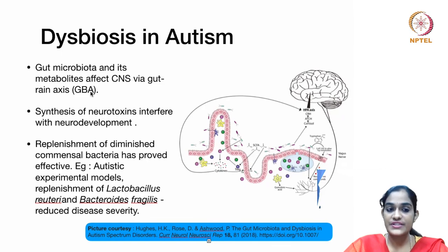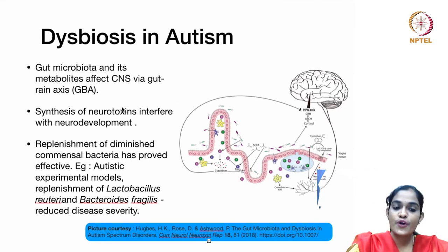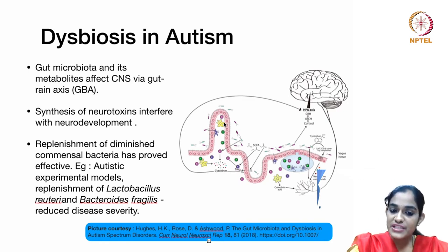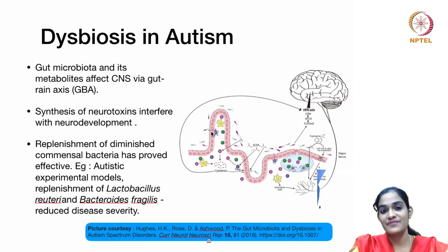Dysbiosis in autism: the gut microbiota and its metabolites affect CNS functioning via the gut-brain axis. Neurotoxins produced by these microorganisms can cross the gut-brain barrier and interfere with normal neurodevelopment in children, affecting behavioral and brain chemistry. Replenishment of diminished commensal bacteria has been proved effective. In experimental autistic models, replenishment of Lactobacillus reuteri and Bacteroides fragilis reduced disease severity.